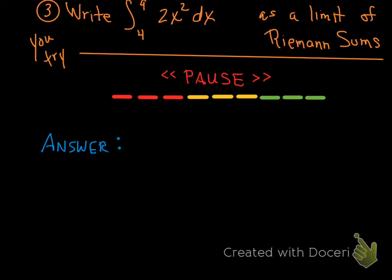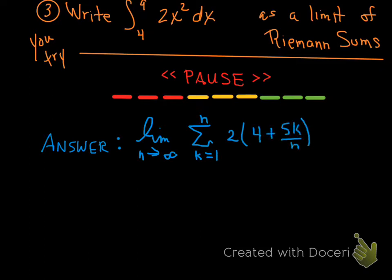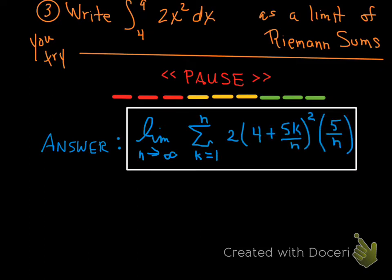Okay. Here's the answer. The answer you should have arrived at here is the limit as n goes to infinity of the sum of k equals 1 to n of 2 times quantity 4 plus 5k over n squared times 5 over n.